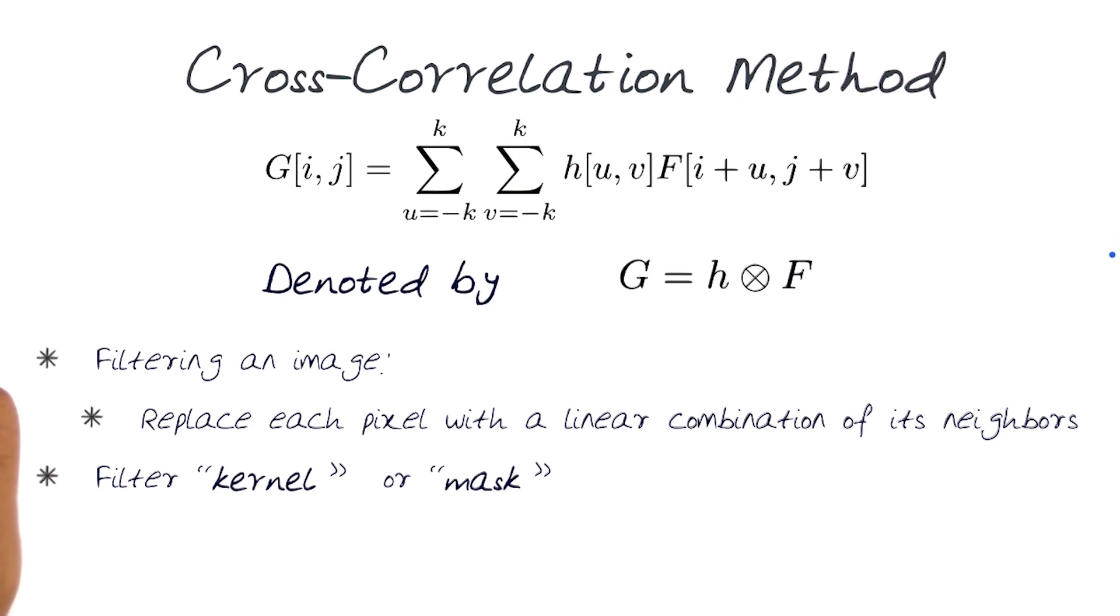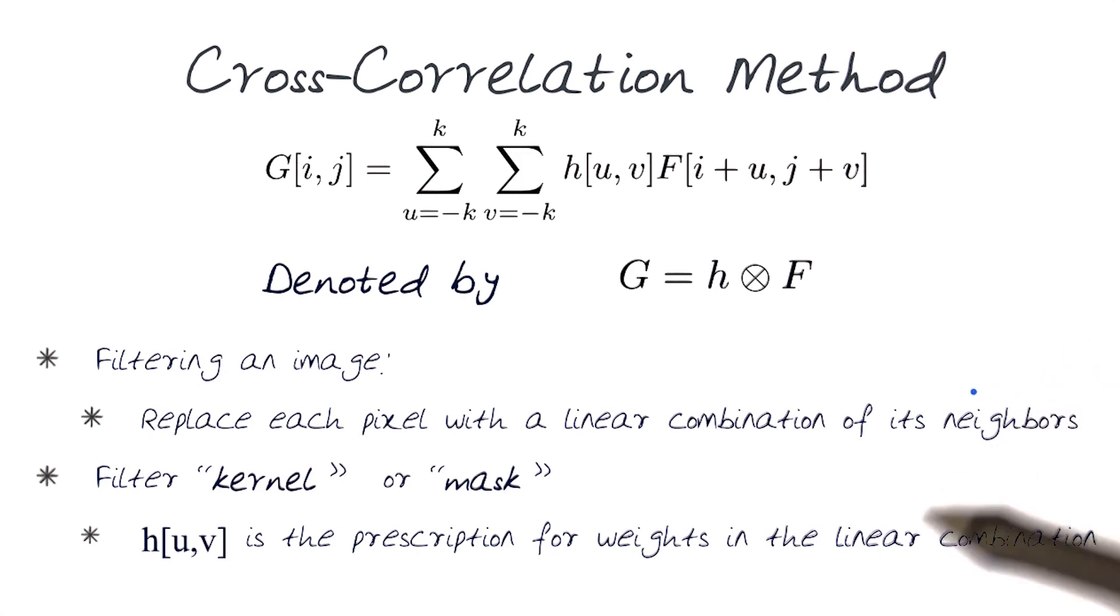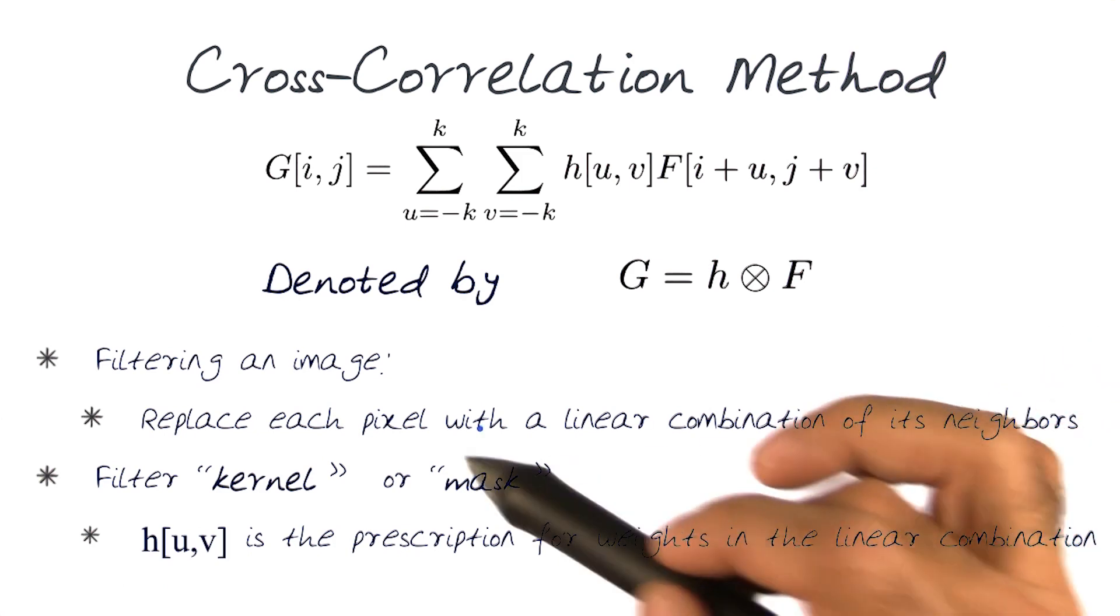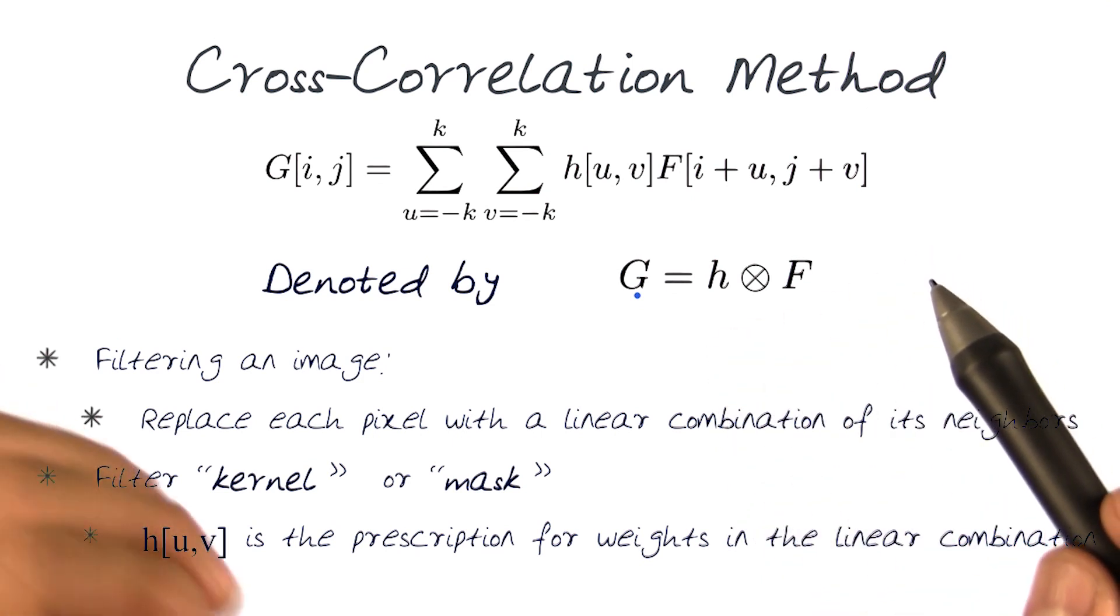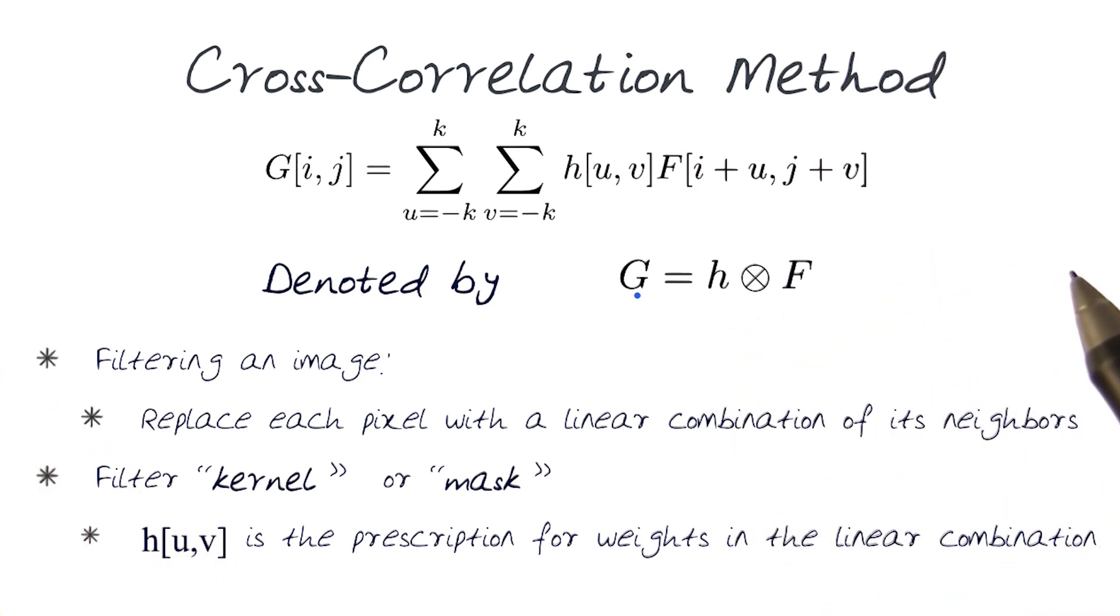And basically that is a prescription, a function of weights, which is applied as a linear combination to generate an output G. And we saw this as I rubbed over again H over the input image F to generate the output G earlier.